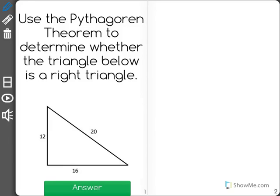Use the Pythagorean theorem to determine whether the triangle below is a right triangle. Well, I know the Pythagorean theorem is a squared plus b squared equals c squared.